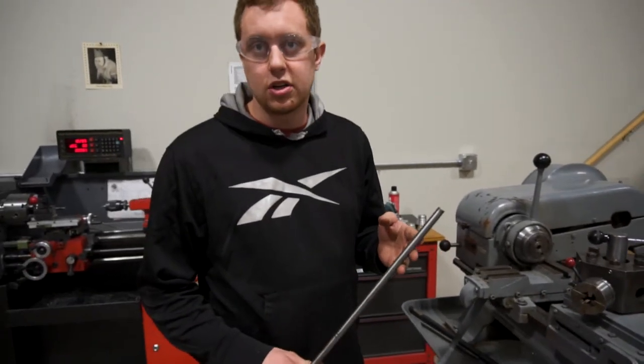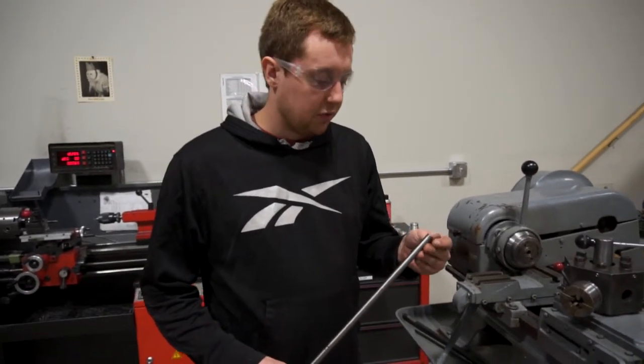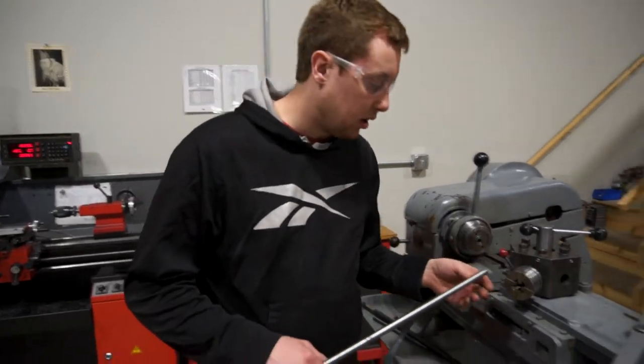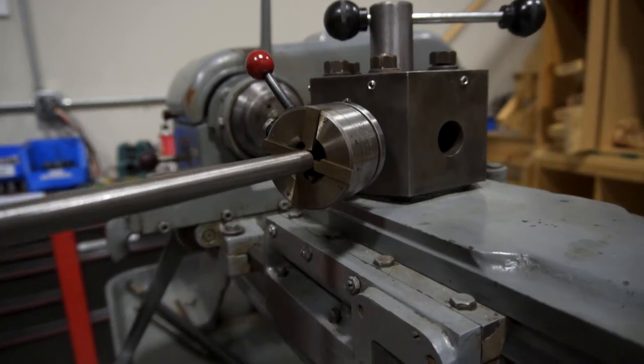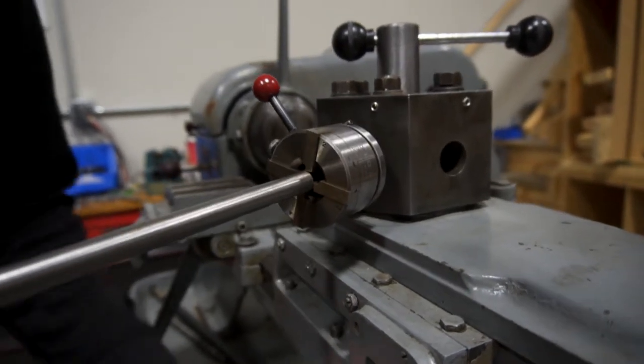So this is the half inch bar stock that we're going to be using. To forego some measurement I'm just going to take a look in here and see how it lines up, if I am even going to be able to cut any threads on that. Looks like I should adjust that out a little bit.